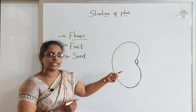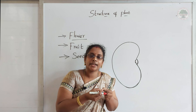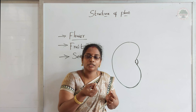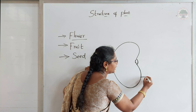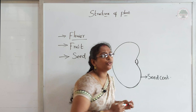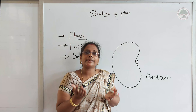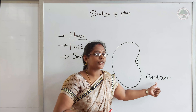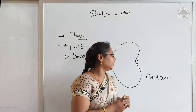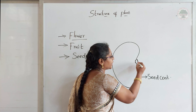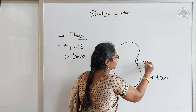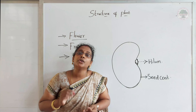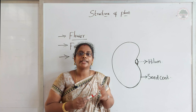Now we are going to see the structure of the bean seed, because that is easily dissectable. If you see a bean seed it will be kidney-shaped. At the center there will be a white colored part. If you start to open the bean seed there will be a very thin skin you can peel out. That thin skin is called the seed coat. The seed coat covers the total seed and also protects everything which is inside the seed. So the function of the seed coat is protecting the seed.